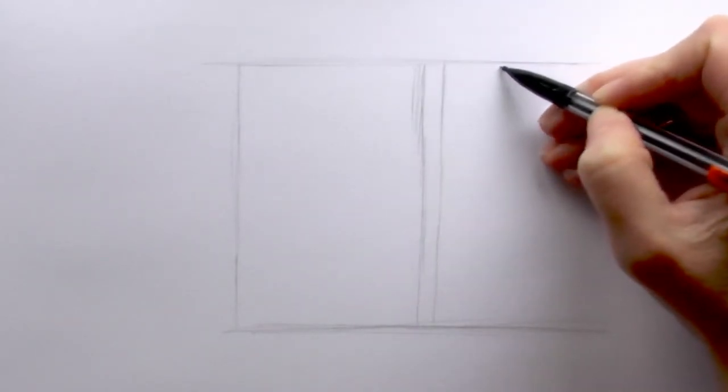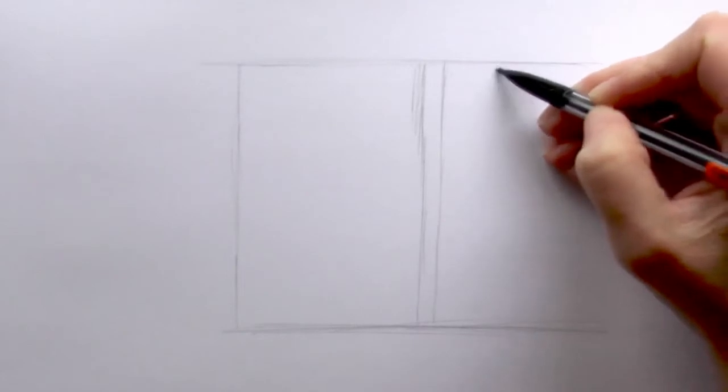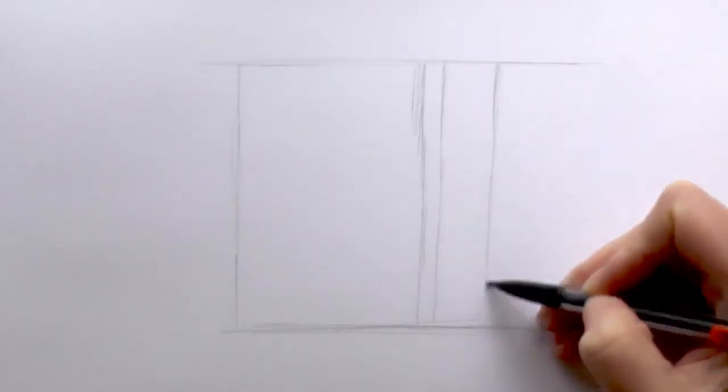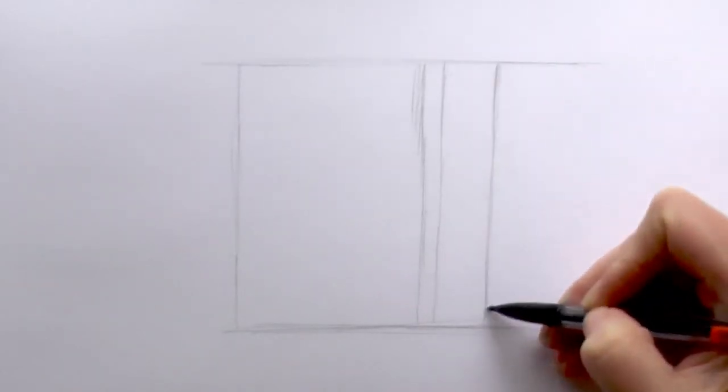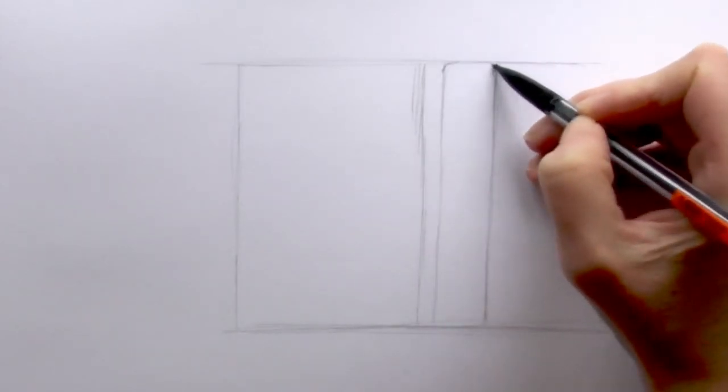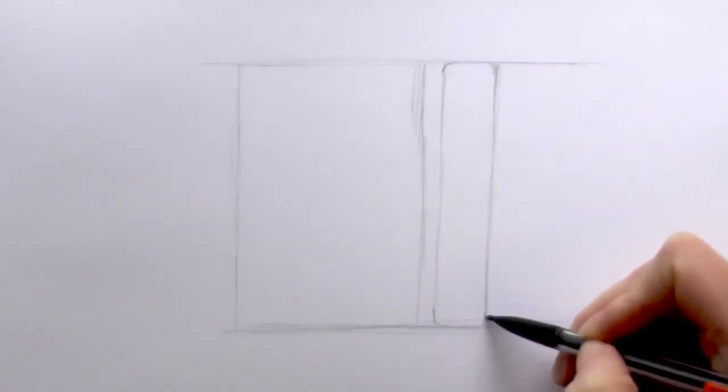Then what we do is we just work out the thickness of our letter so we probably want it to be about that thick. So we draw a line down there and that's basically our lowercase L.